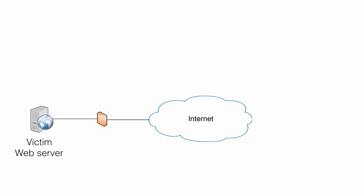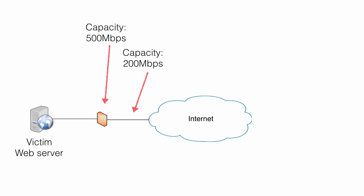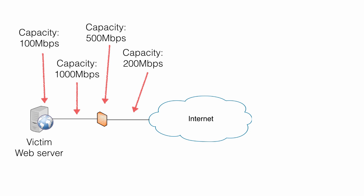The system is connected to the internet via a local internet connection with a bandwidth of 200 megabits per second. There is a firewall filtering and inspecting all traffic between the web server and internet, with a capacity of 500 megabits per second. The internal network has a capacity of 1 gigabit per second, and the web server itself can handle 100 megabits per second. The entire system is sized for a maximum of 100 megabits per second of traffic, which means that the weakest link of the chain — the web server — has a capacity of 100 megabits.